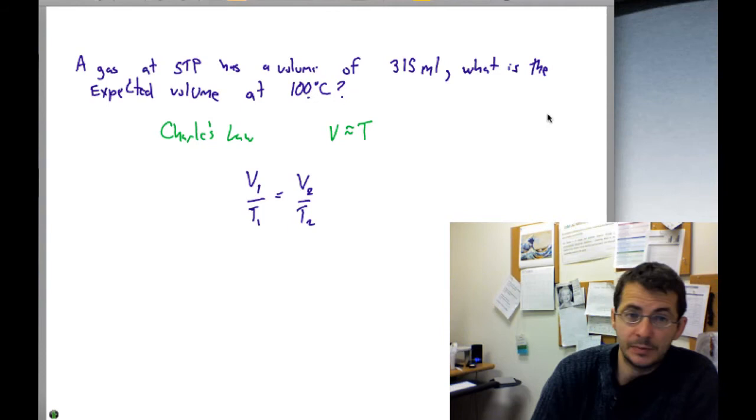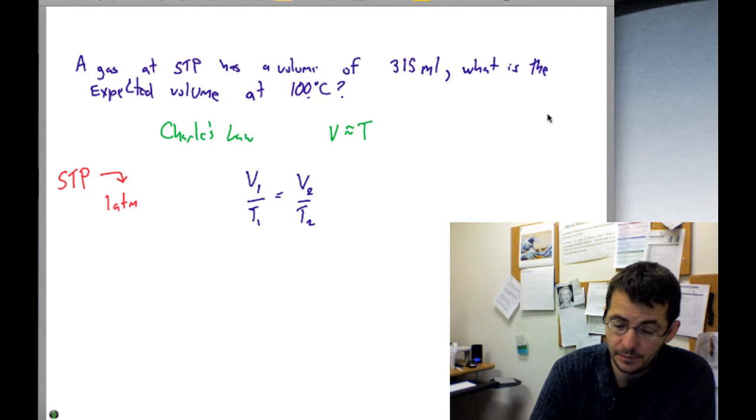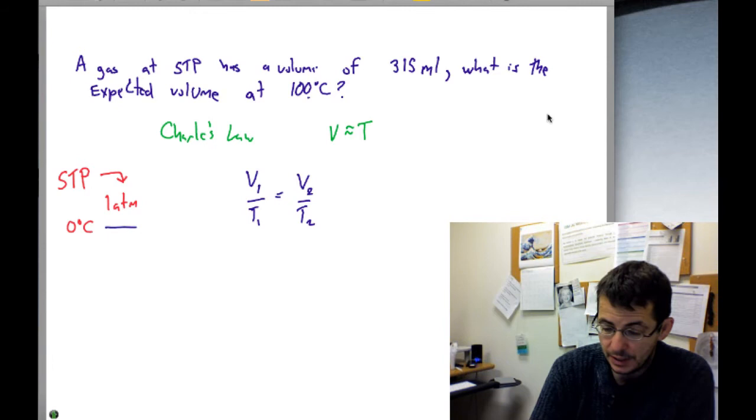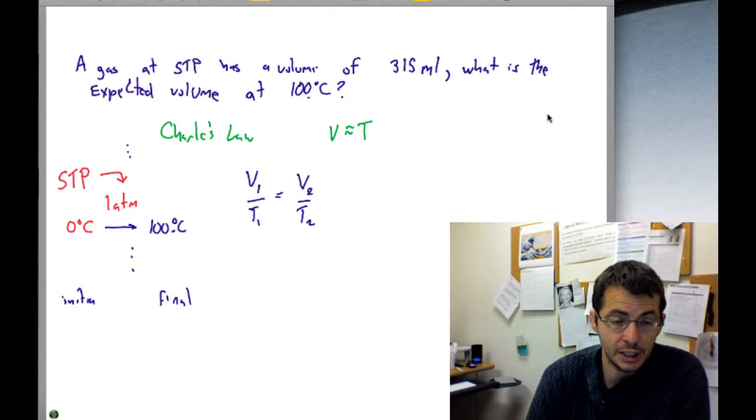And we can use those little tips that I offered for how to look at these problems and we start listing out information. STP is shorthand notation for standard temperature and pressure, which means one atmosphere, zero degrees centigrade. And so we want to know what the temperature is upon going from zero degrees centigrade to a final temperature of 100 degrees centigrade. So here's an initial set of conditions, and here's a final set of conditions where something has changed. Very typical gas law problem.